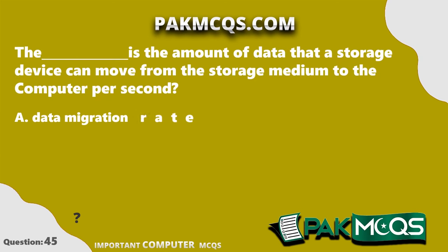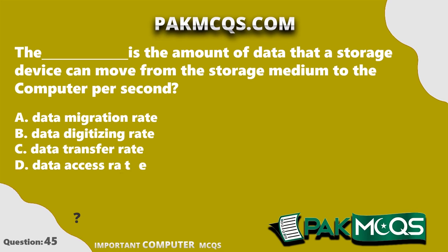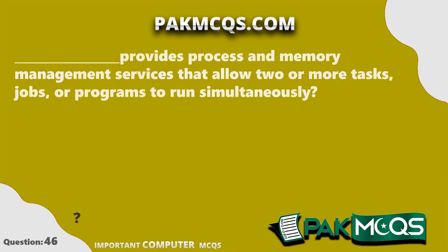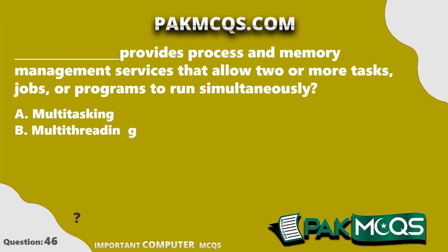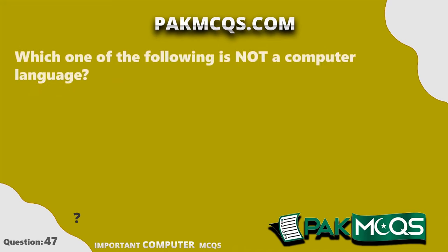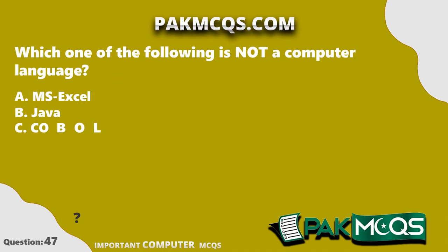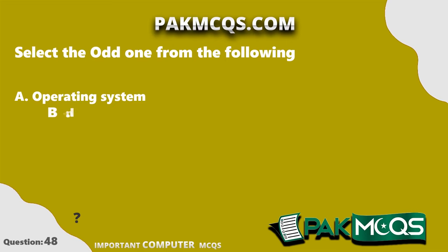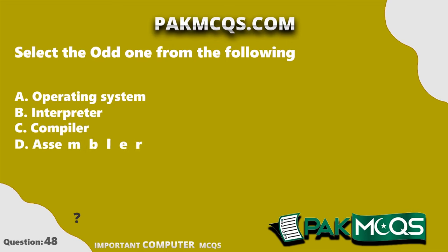The data transfer rate is the amount of data that a storage device can move from the storage medium to the computer per second. Multitasking provides process and memory management services that allow two or more tasks, jobs, or programs to run simultaneously. MS Excel is not a computer language. The odd one out from the following is operating system.